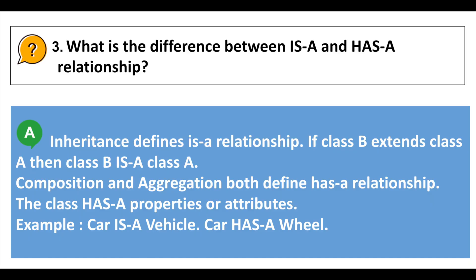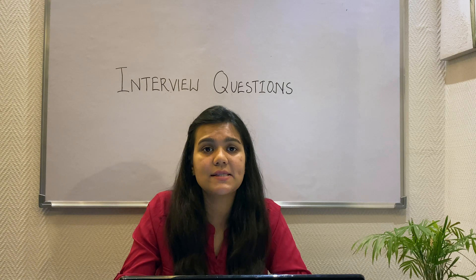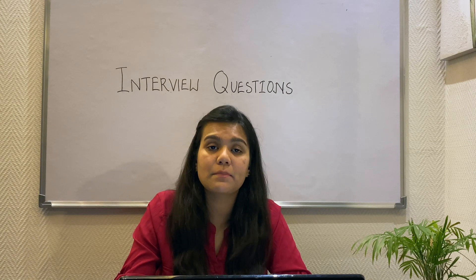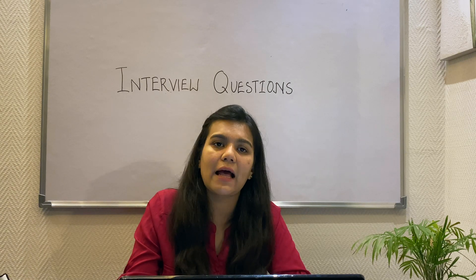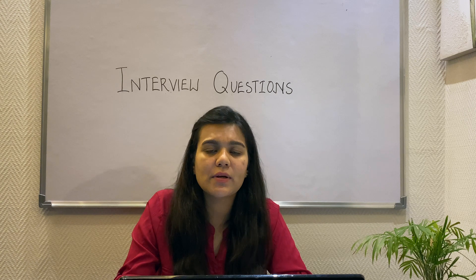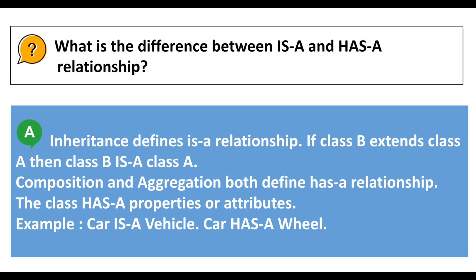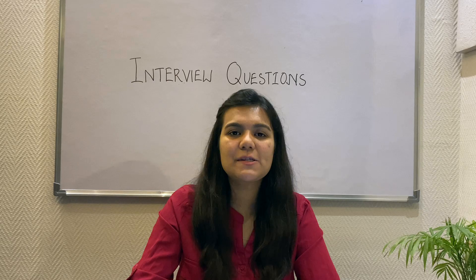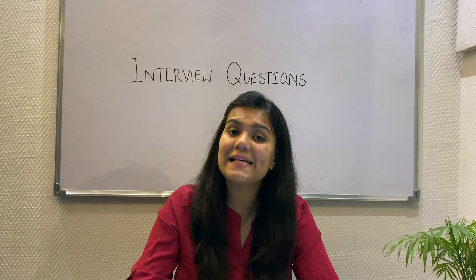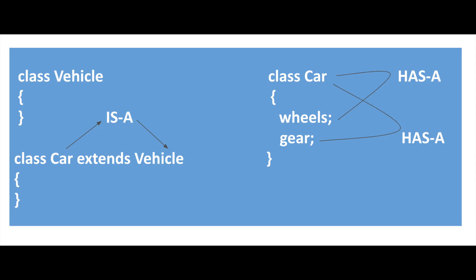Now the third question: What is the difference between the is-a relationship and the has-a relationship? Inheritance defines the is-a relationship. Class B extends A, meaning class B is a class A. While aggregation and composition define the has-a relationship — a class has a property or some attributes. For example, car is a vehicle, so vehicle becomes the base class and car becomes the derived class.